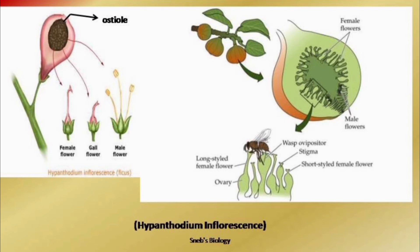The wasp enters the hypanthodium and lays its eggs in the sterile flowers. To reach the bottom, it must pass through the narrow passage known as the ostiole. As the wasp enters and exits, pollen grains stick to its body and wings. When it enters another hypanthodium, the narrow passage causes the wings to touch the wall and pollen grains fall on the flowers inside. When pollen lands on the fertile female flowers, cross-pollination takes place. The wasp gets a secure place for egg-laying, and the hypanthodium gets cross-pollinated — mutual benefit to both.